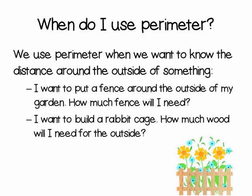We use perimeter when we want to know the distance around the outside of something. For example, I want to put a fence around the outside of my garden, so how much fence will I need? Or, I want to build a rabbit cage — how much wood will I need for the outside?